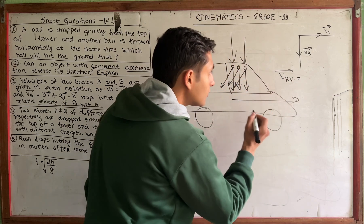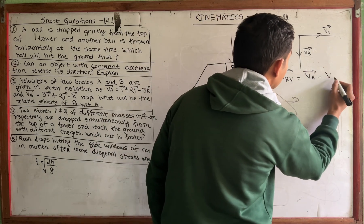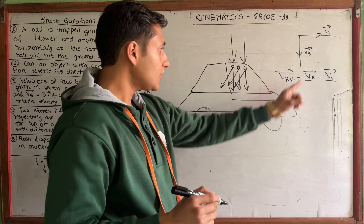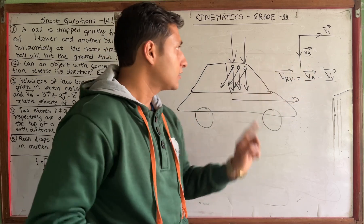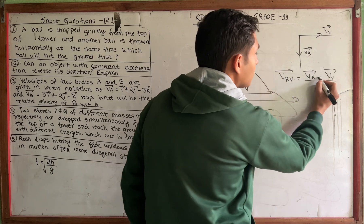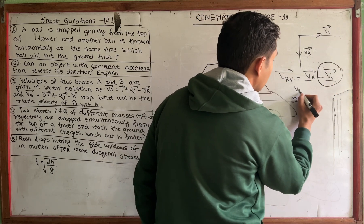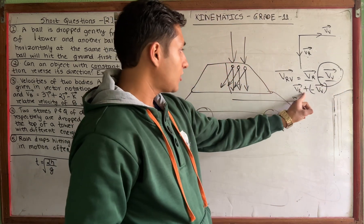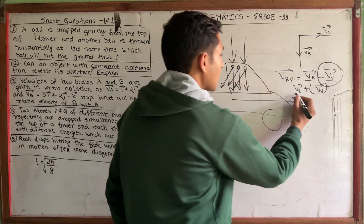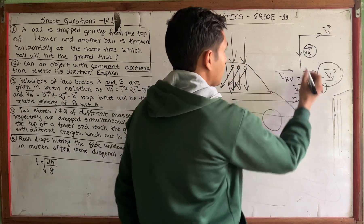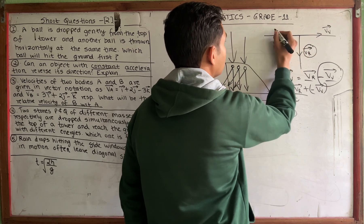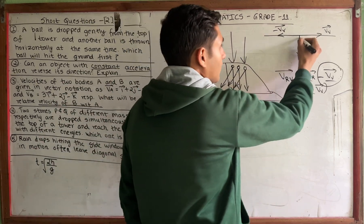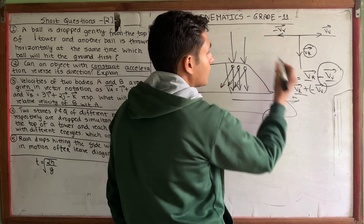The formula is: V_RV = V_R minus V_V, which means we add the opposite vector of V_V. So V_RV = V_R + (−V_V). The resultant vector of V_R and −V_V gives a diagonal direction, which explains why the raindrops appear to strike the side windows diagonally when the car is moving.